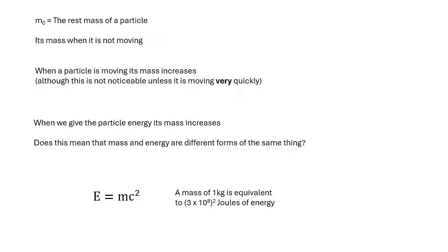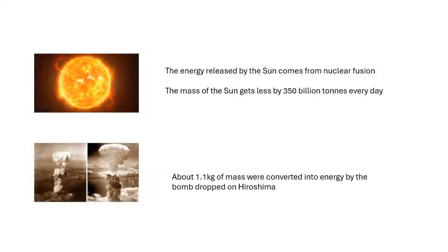That tells us how much energy you could get from a certain mass. A mass of one kilogram, if m equals one, would give you three times ten to the eight squared joules of energy - nine times ten to the sixteen joules. One kilogram of mass is a huge amount of energy.